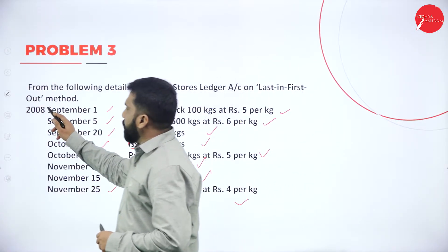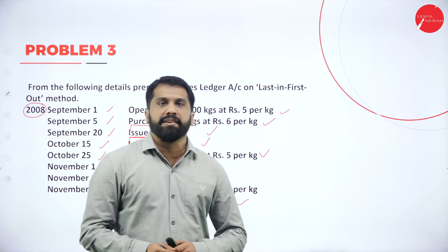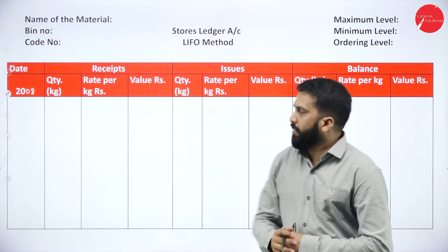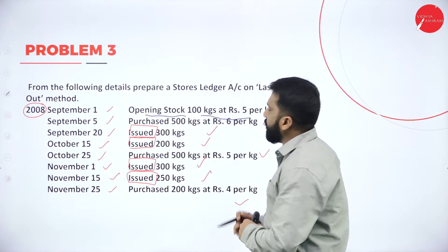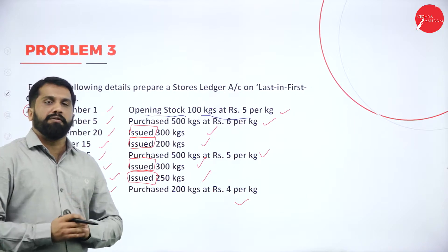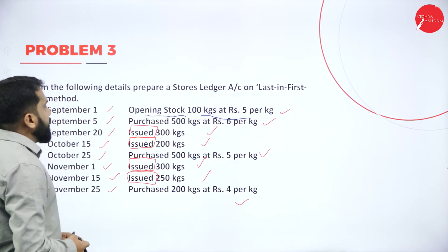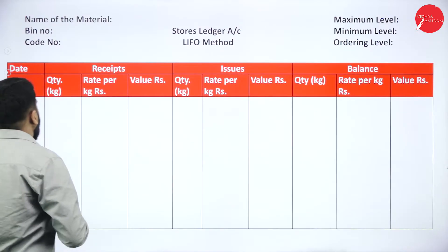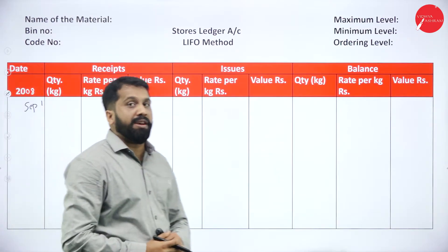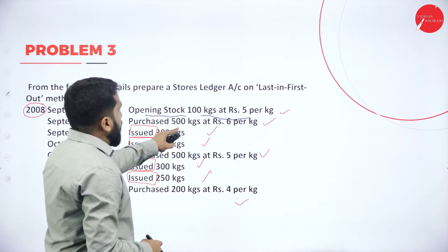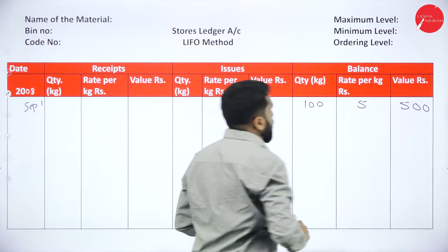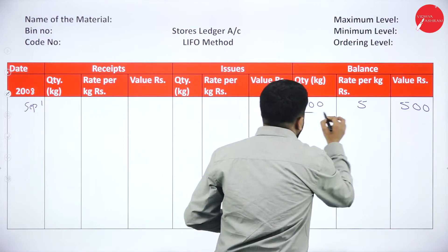All problem data is for 2008, so we will write 2008 in the year column. The first entry is opening stock of 100 kg at Rs 5 per kg. As I told you, for opening and purchases no changes — whatever you are doing for FIFO, same thing we will do. Opening stock: date September 1st, opening always comes in the balance column. Quantity 100, rate 5, value is 500.